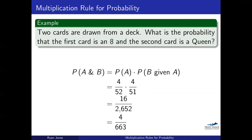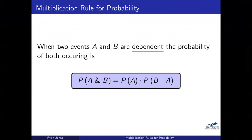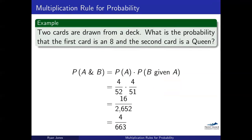We have to amend the formula for dependent events. The correct calculation is: P(A and B) = P(A) × P(B|A). The probability of drawing an eight is 4/52, and then given that we've already drawn an eight, there are 51 cards left with four queens, so P(B|A) = 4/51. That vertical symbol means 'given' — P(B|A) means the probability of B given that A has already occurred. The probability of drawing a queen actually increases slightly because we've removed a non-queen card.